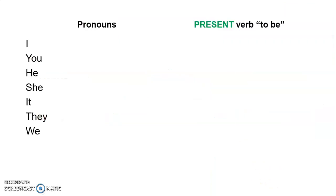I know you all know this really well because you've done a great job in class. We're going to talk about the verb 'to be.' To be means ser o estar. And I know that you know the pronouns: I — yo; you — usted, tú, or ustedes; he — él; she — ella. It — es un poco difícil traducir 'it,' pero lo usamos cuando estamos hablando de una situación, o un objeto, o algo que no es humano. They — ellos o ellas. We — nosotros o nosotras.